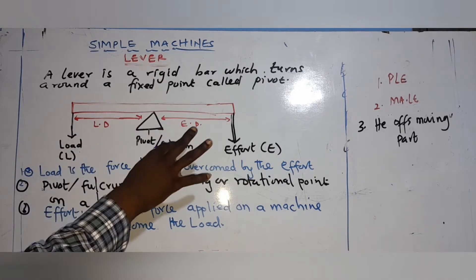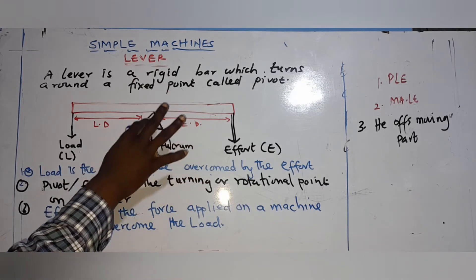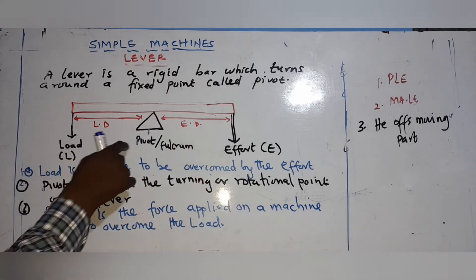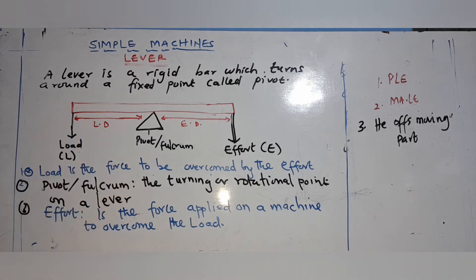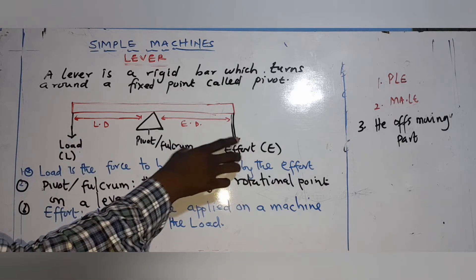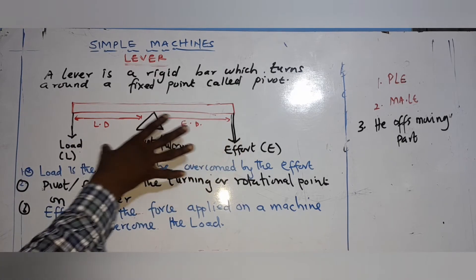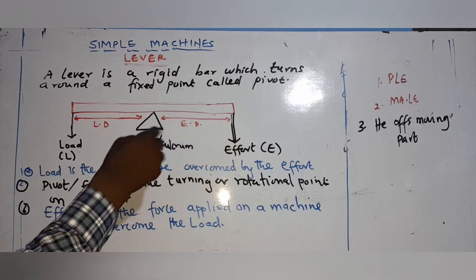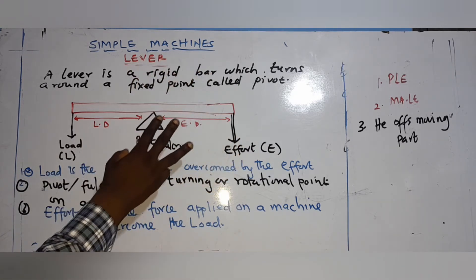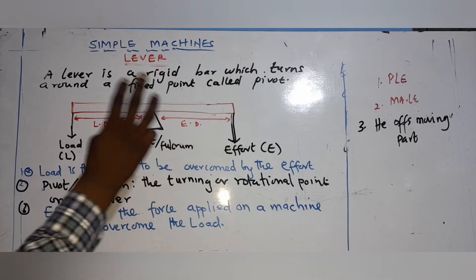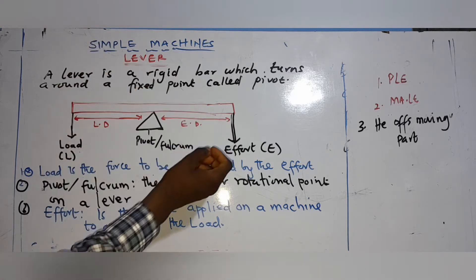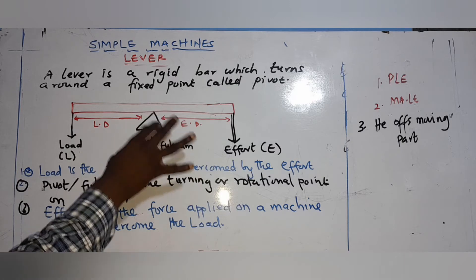Now the lever has different classifications. Look at the first mnemonic for remembering classifications. We have the pivot, the load, and the effort — these three parts. Based on their arrangement, we have three classifications: the first class lever, the second class lever, and the third class lever.